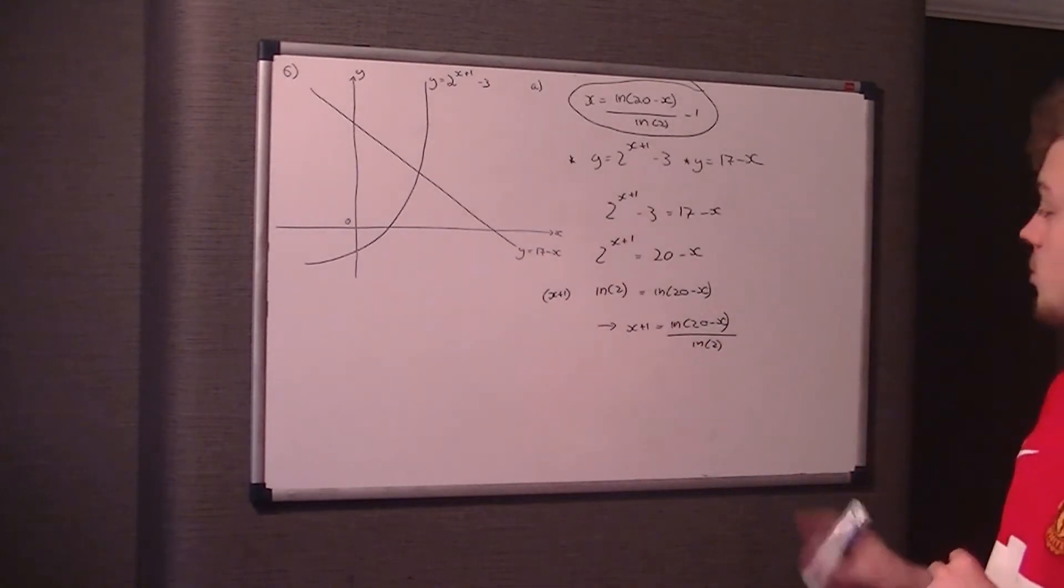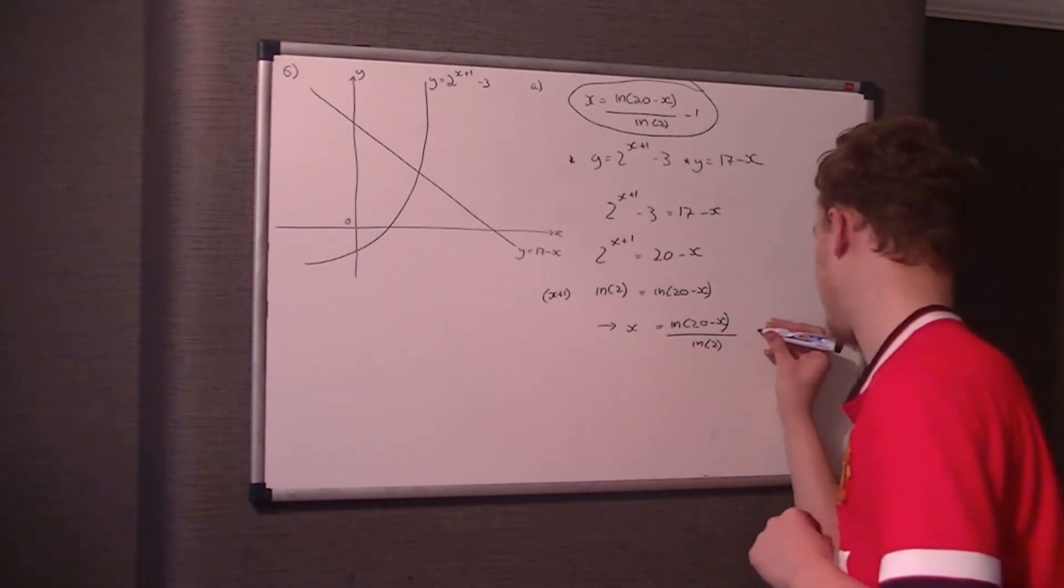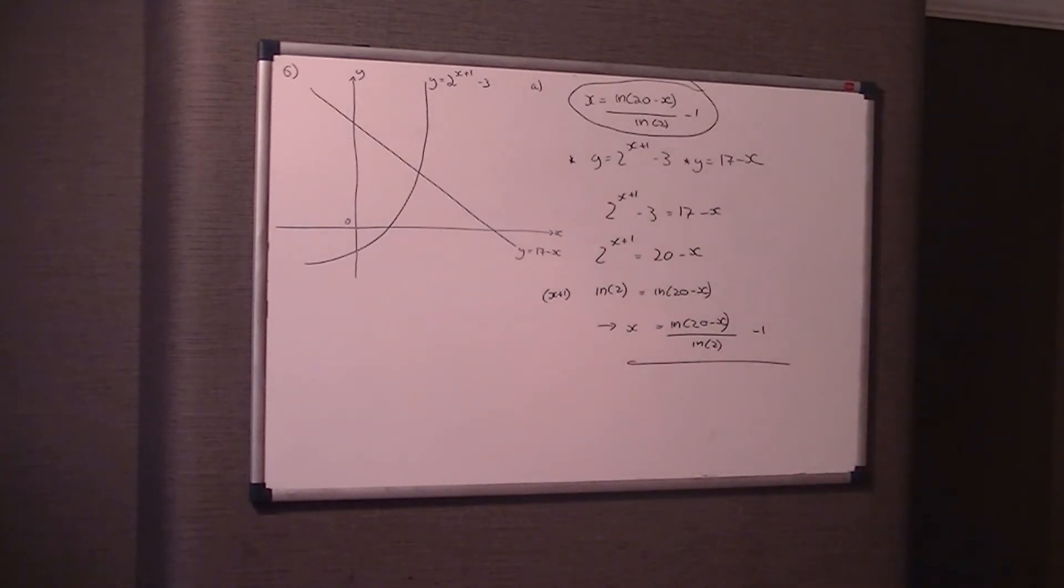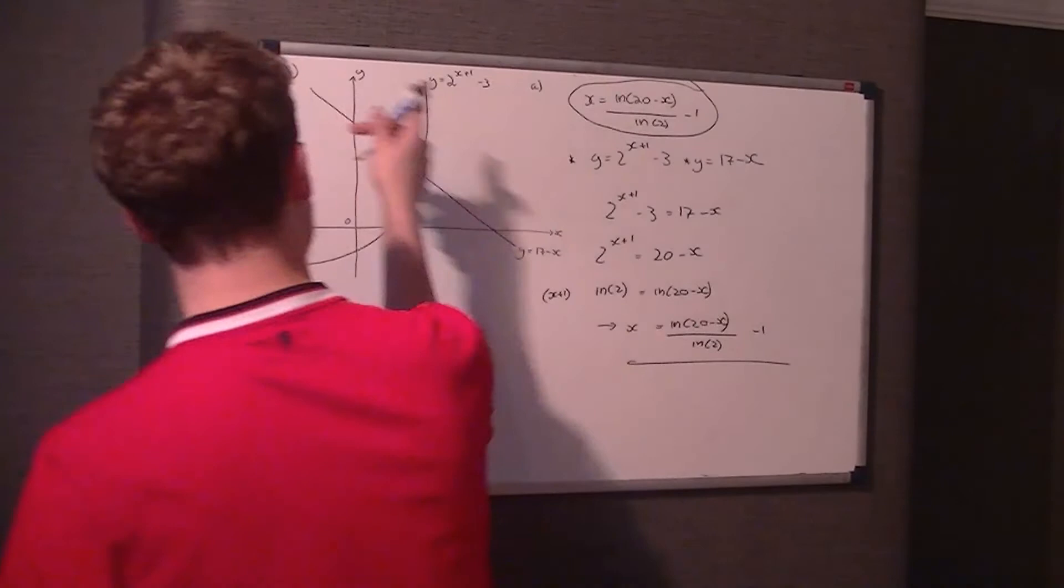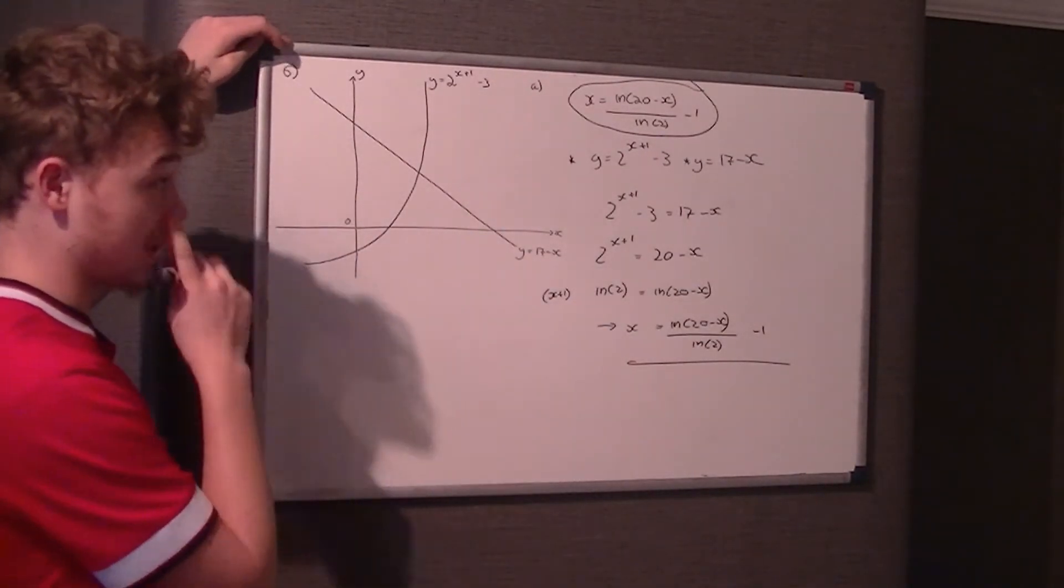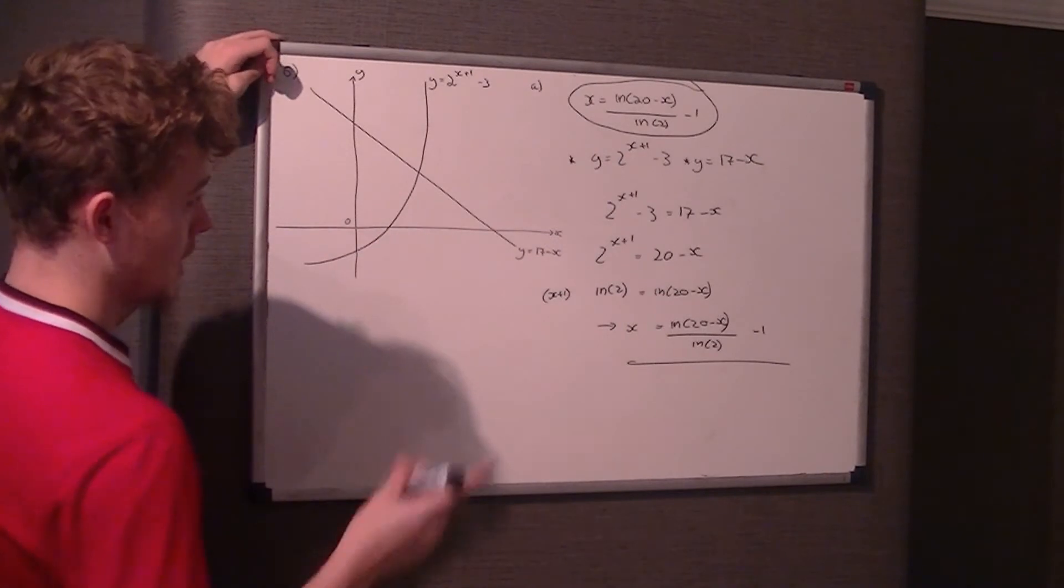Now, it doesn't want x plus 1, it wants x. So what we do is move this plus 1 onto the right-hand side, and there we are in required form. Now, I just want to show you, if you didn't see that, there's a way to work backwards. So let's start from the end here. So x equals LN of 20 minus x over the LN of 2 minus 1. So the first thing I would do is add the 1.